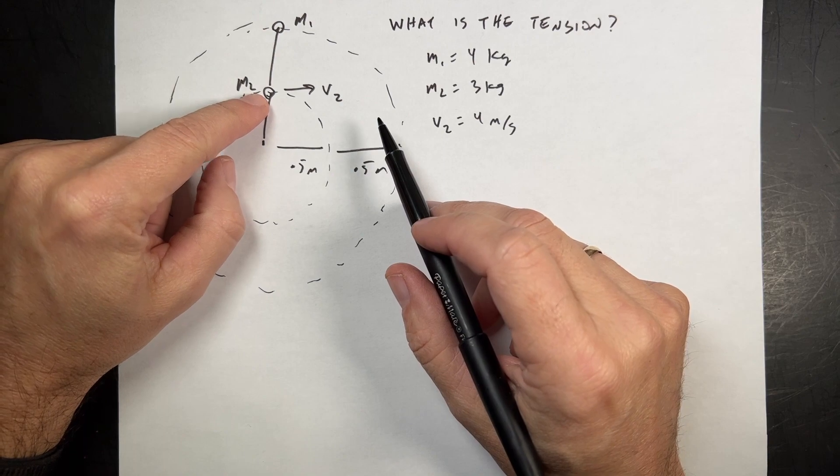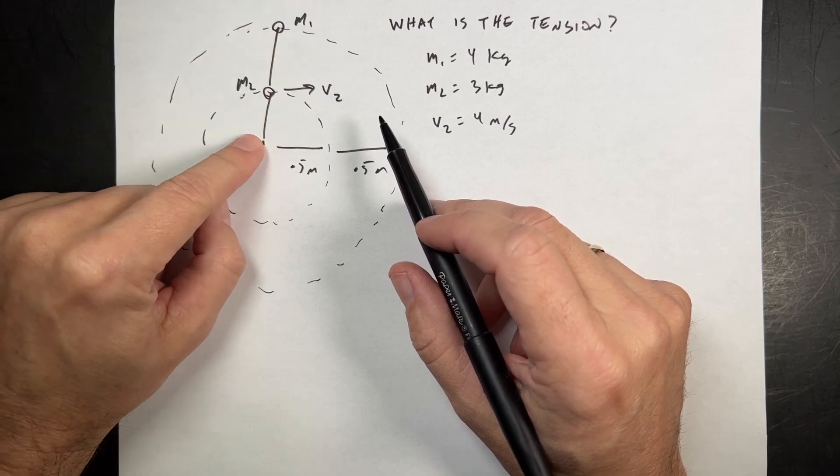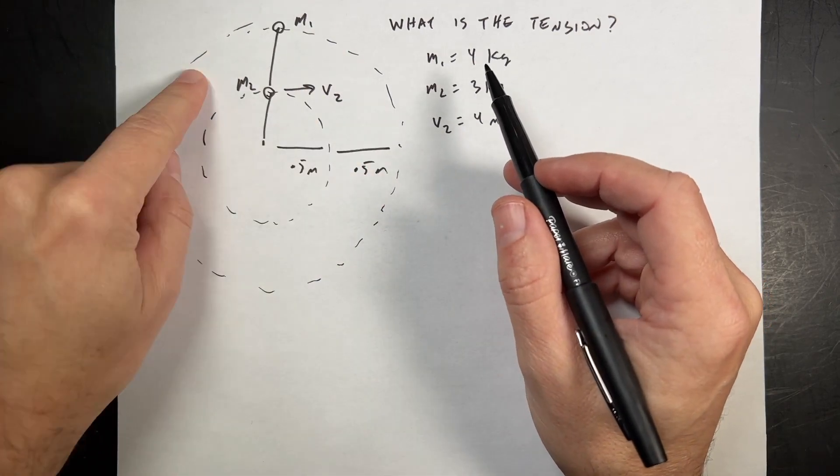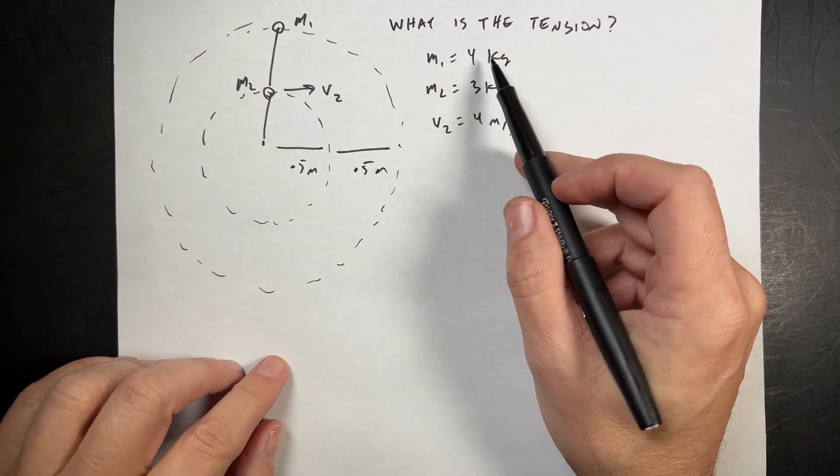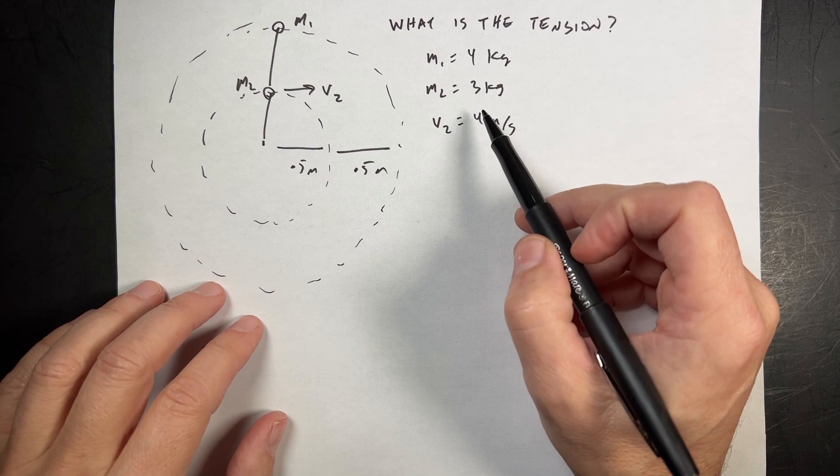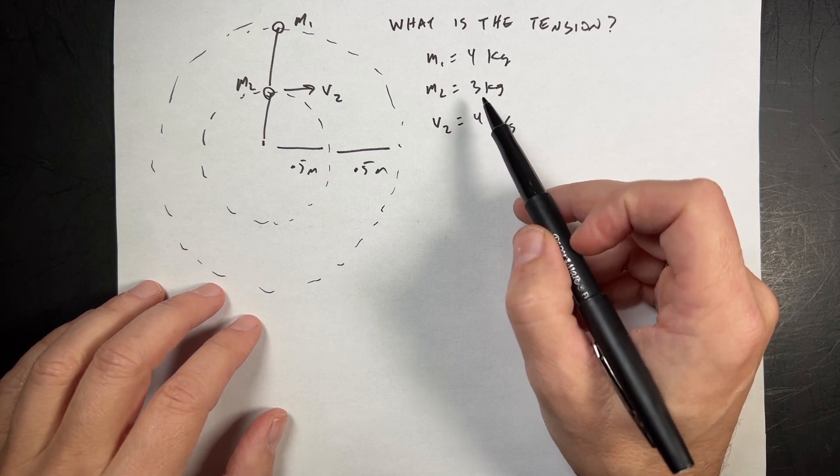Here I have two masses connected by strings and is swinging around in a vertical circle like this. And mass 1 is 4 kilograms, which is really kind of heavy, but whatever. Mass 2 is also 3 kilograms.